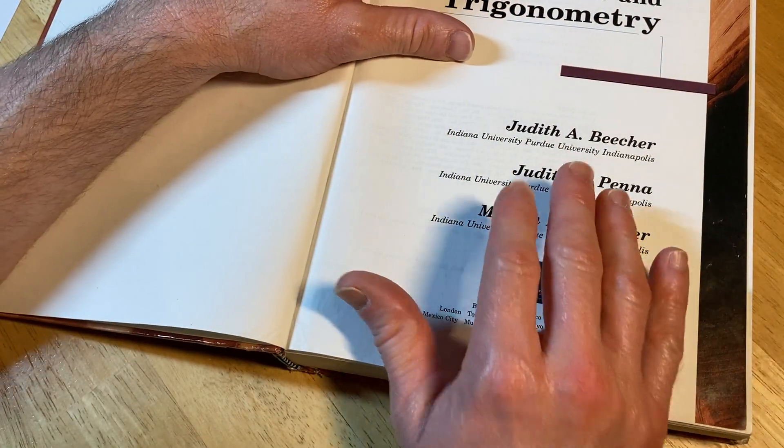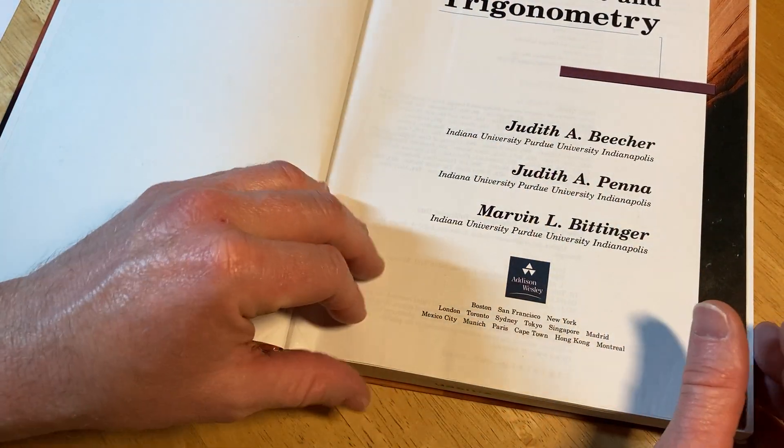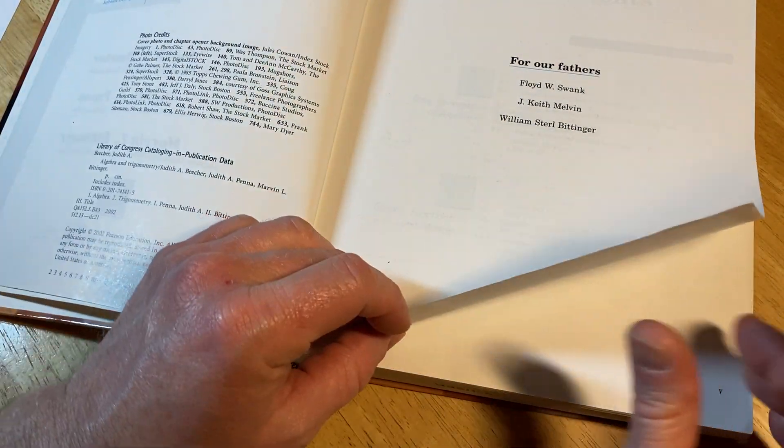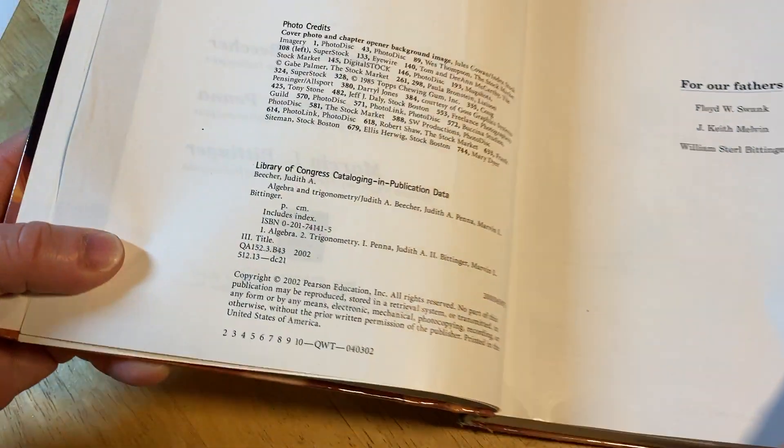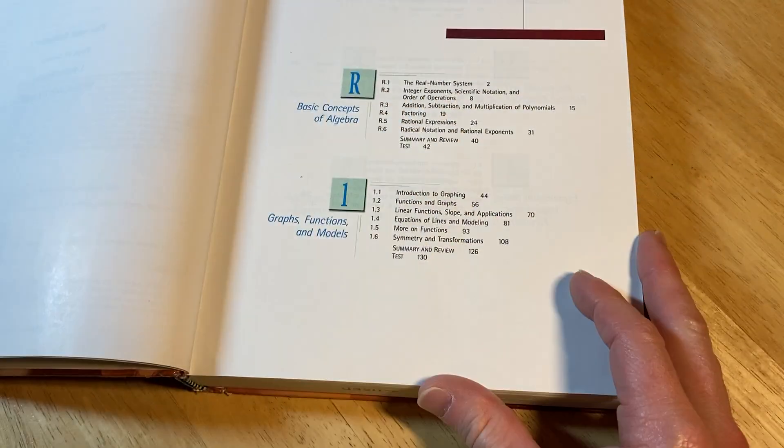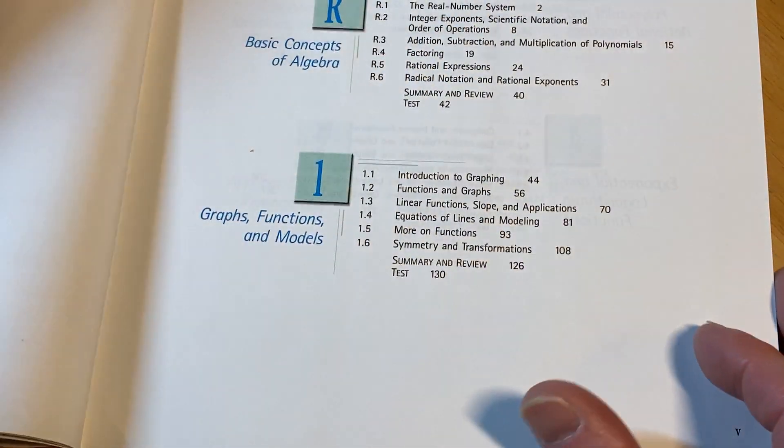So let's take a look at it. These authors are well-known. And this one's from 2002. Here's the copyright, 2002 Pearson Education. And here are the contents. Let's take a look at the contents, see what they chose to cover.